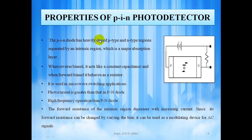The PIN diode has heavily doped P and N type regions separated by an intrinsic region which is a major absorption layer. In reverse bias, it acts like a constant capacitance and in forward bias, it behaves as a resistor. Used in microwave switching applications, photocurrent is greater than that in PN diode. High frequency operation than PN diode. Forward resistance of the intrinsic region decreases with intrinsic current. Since its forward resistance can be changed by varying the bias, it can be used as modulating device for AC signals.